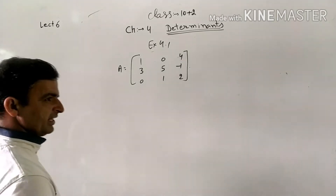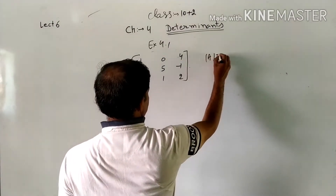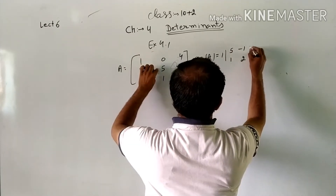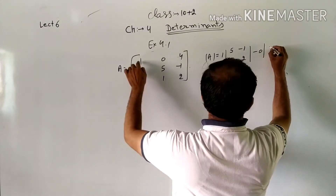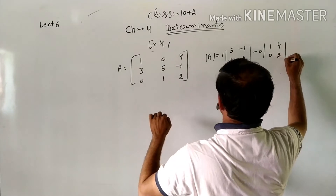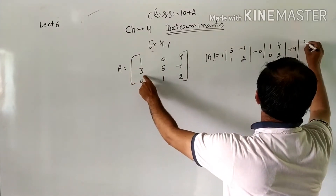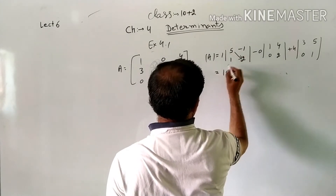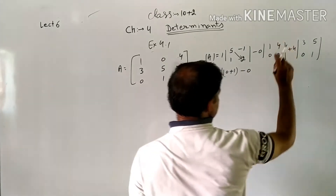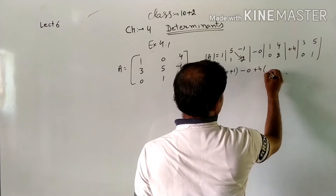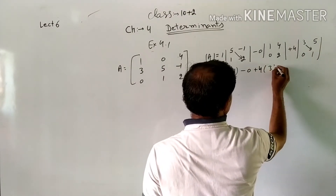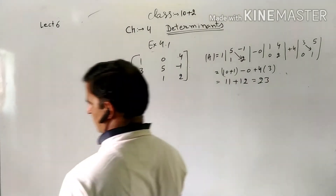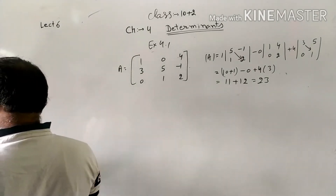The determinant of this matrix: expanding along the first row gives 1×(5×2 - (-1)×1) - 0×(3×2 - (-1)×0) + 4×(3×1 - 5×0). Working through the values, the determinant comes out to 23.